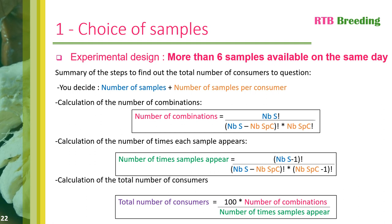Here is a summary of the various calculations. You decide how many samples you want to study and how many samples each consumer will test. You then calculate the number of possible combinations, then the number of times each sample appears in these combinations, and finally the total number of consumers to question so that each sample has been tested at least 100 times. You can also choose to have each sample tested at least 125 times by redoing the calculations using 125 instead of 100. This approach is not necessary if you only have 6 samples or fewer to analyze at one time, since all consumers will be able to taste all the products.